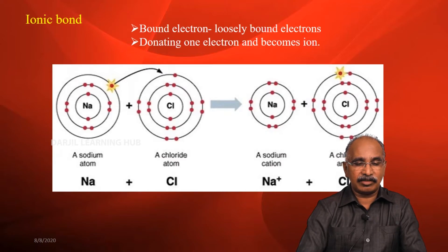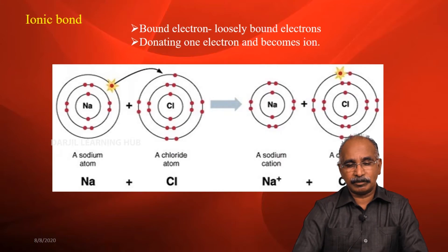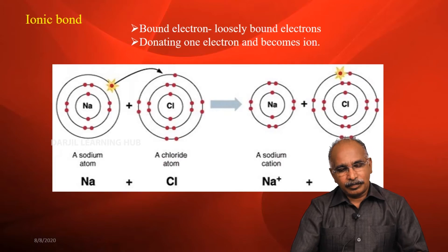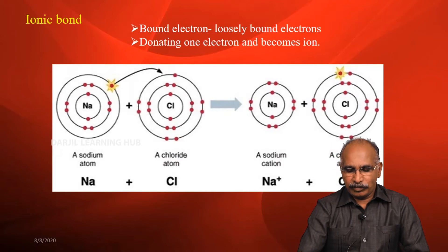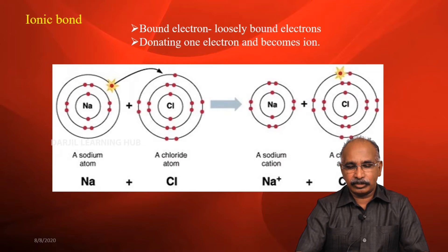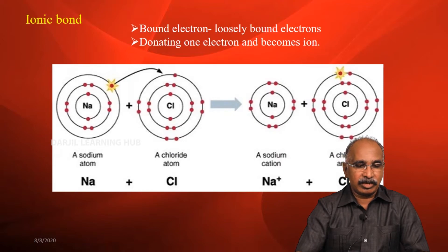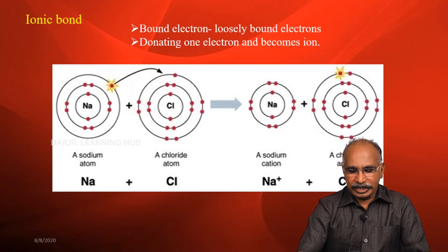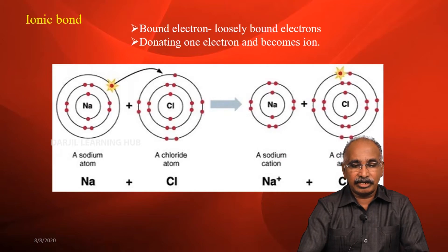In the sodium and chlorine atoms, the sodium atom becomes a positive ion and the chlorine atom becomes a negative ion. The sodium atom completely donates one electron to the chlorine atom — this is what we call the ionic bond. In an ionic bond, one atom donates an electron and another atom accepts it. This is the strongest bond.